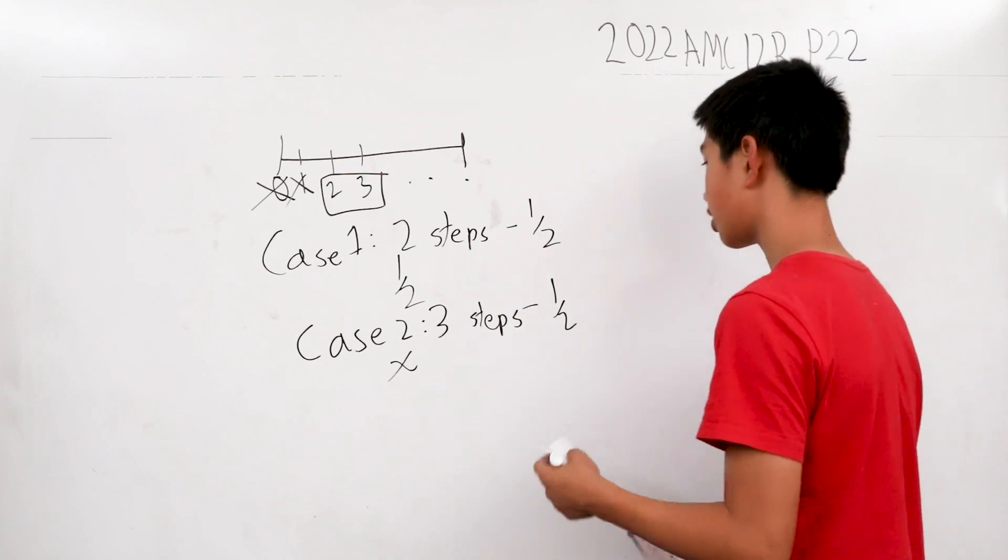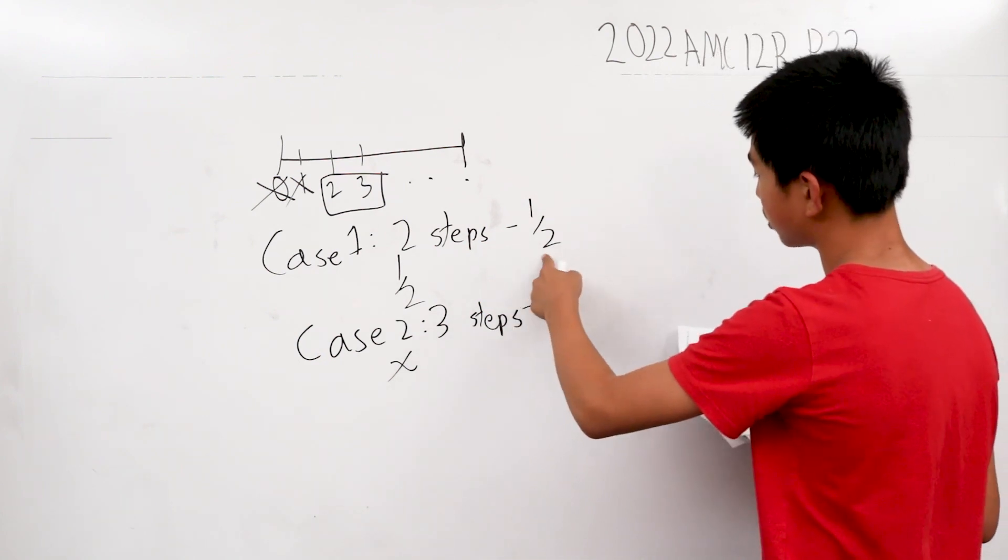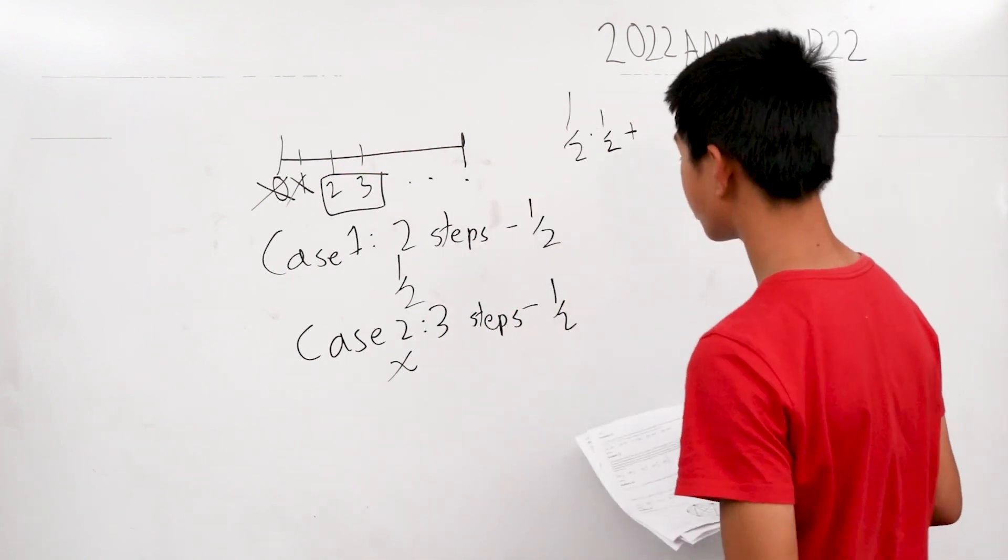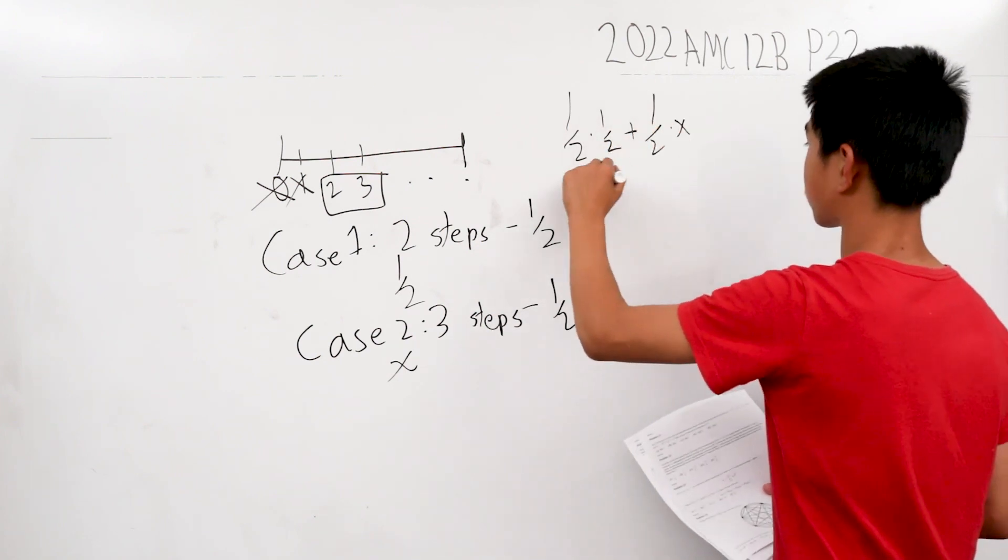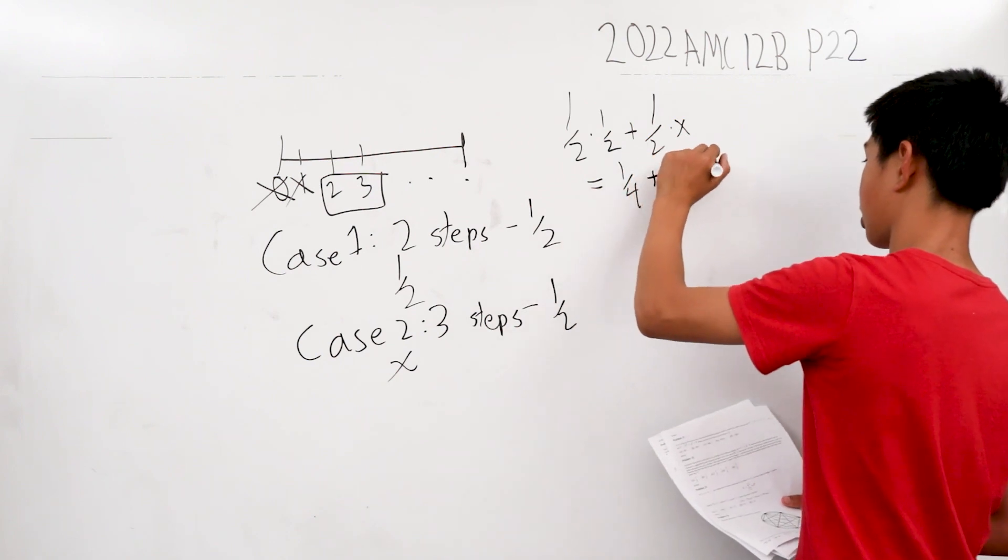Now, summing this probability for the two steps, we multiply 1/2 and 1/2, and add to it 1/2 times x. This is 1/4 plus 1/2 times x.